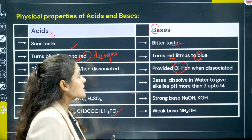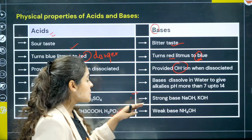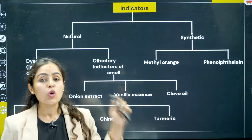Moving on to bases — their pH is above 7 to 14. Strong bases include NaOH, KOH, and calcium hydroxide. Weak bases include ammonium hydroxide, which is one of the most common examples of a weak base.